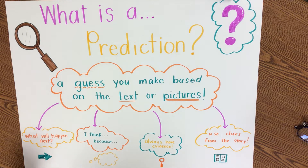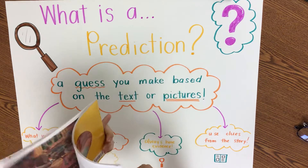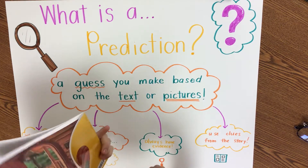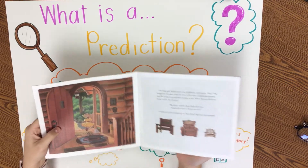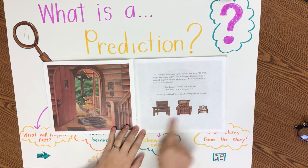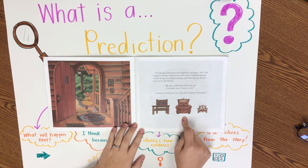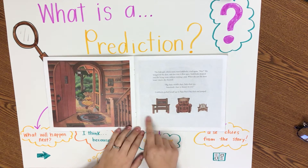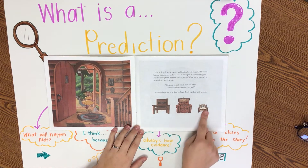We can say a prediction is what will happen next. Let's think back to our Goldilocks and the Three Bears book. We see that Goldilocks came into the house. Based on the pictures that you see right here, what do you think is going to happen next? Where is she going to go? Yeah, she's going to go into the living room and bounce on the chairs, because we can see that there are chairs.